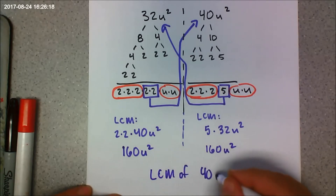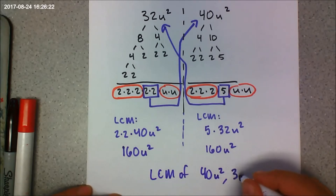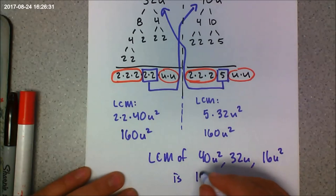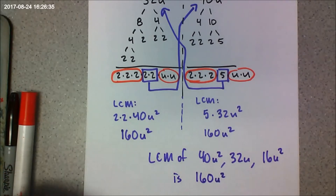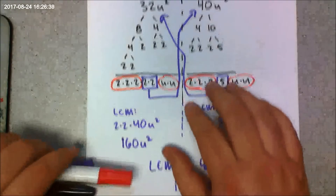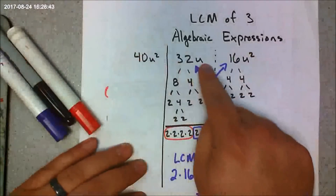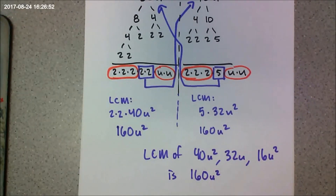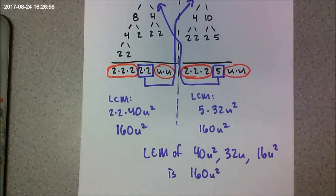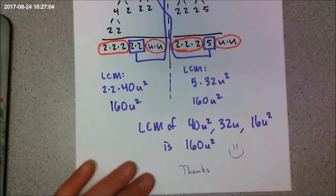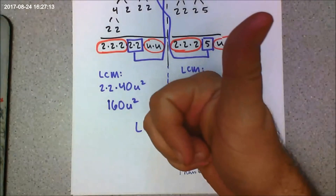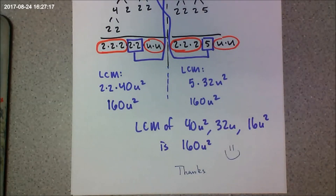So the LCM of 40u squared, 32u, and 16u squared is 160u squared. Another way to find this is to list all the multiples of each expression and circle the lowest one they share. Thanks for watching — this has been Mr. Anderson's Algebra 1 Lessons. If you'd like to comment, like, or share the video, please do. Good luck in all that you do!